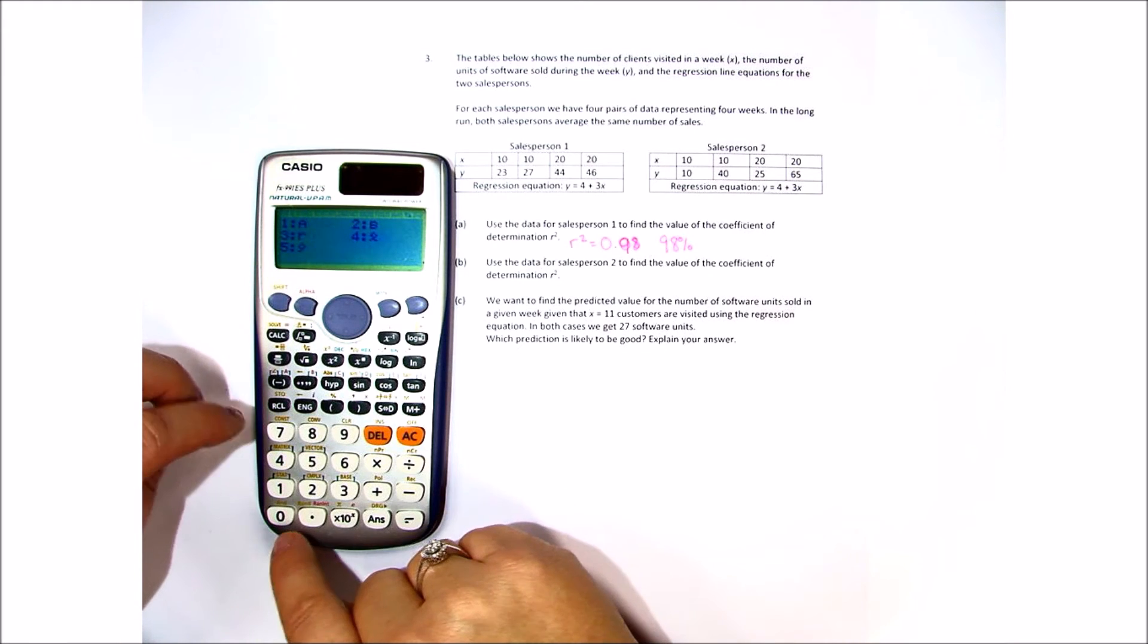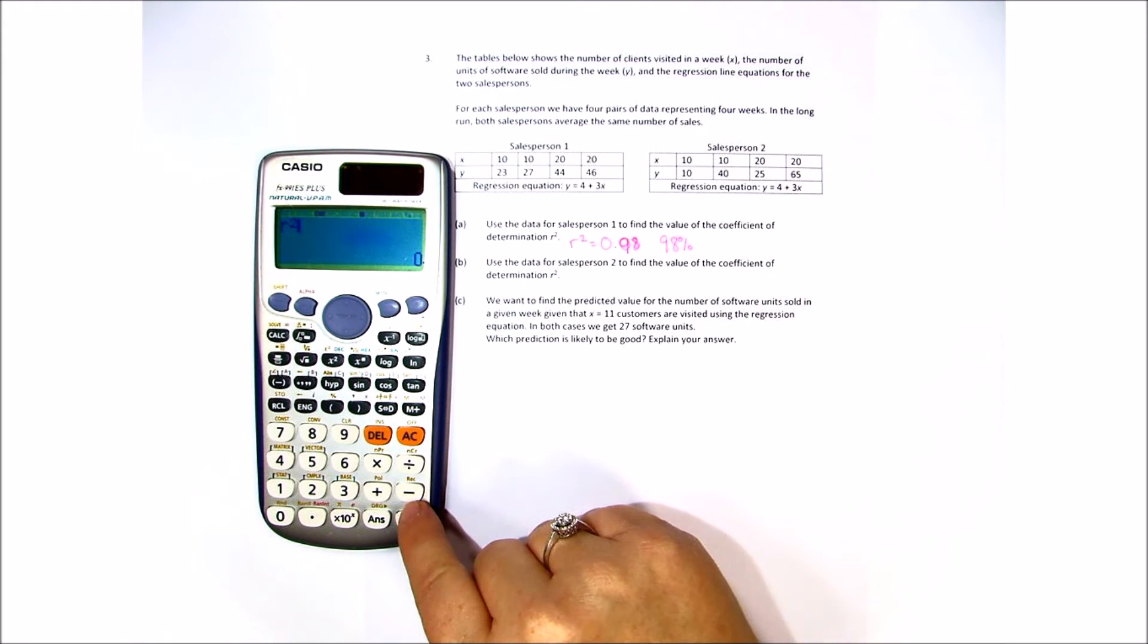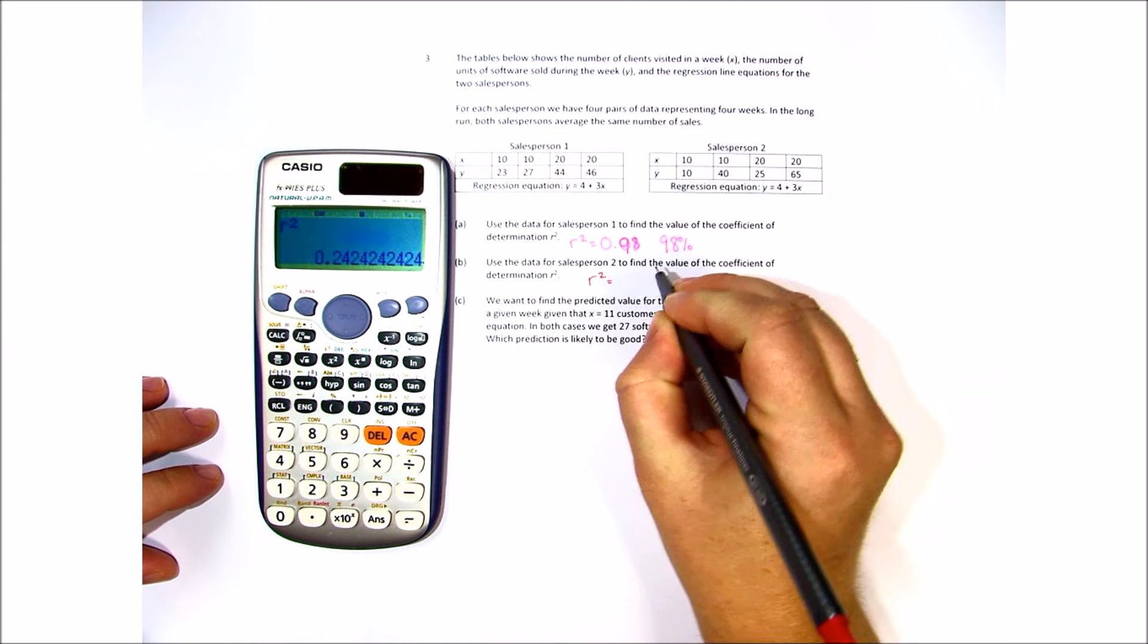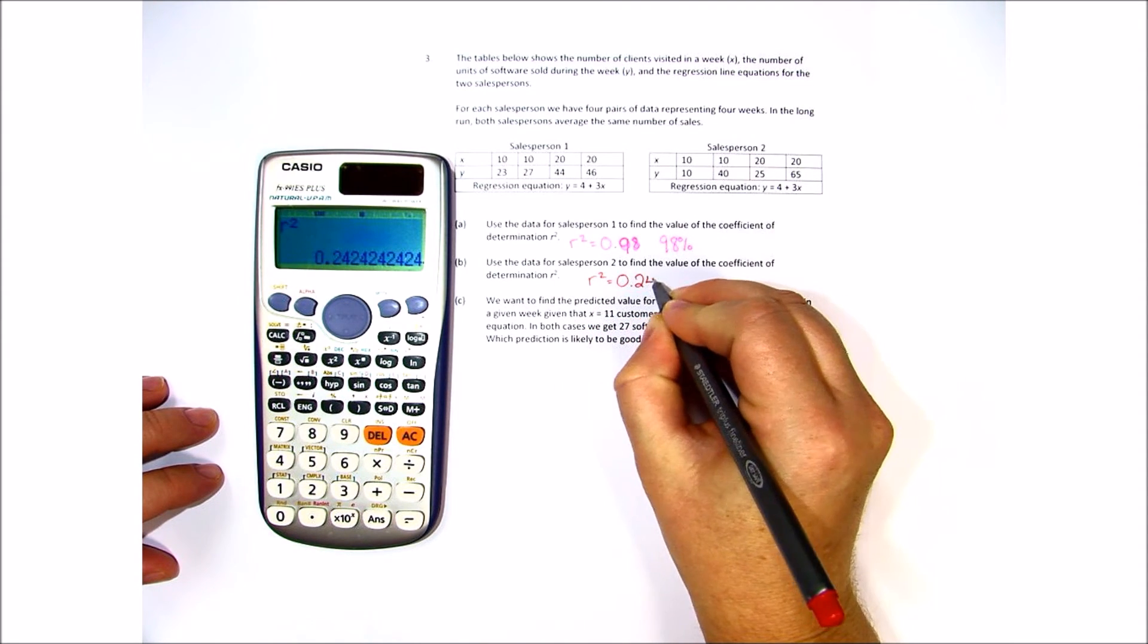Once again we're going to go in and we're going to find r but square it. And for sales person 2 we find r squared is 0.24.